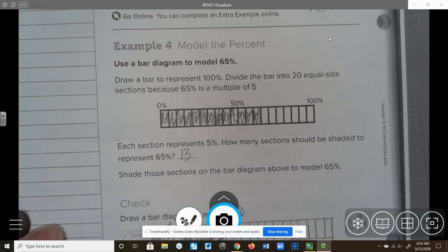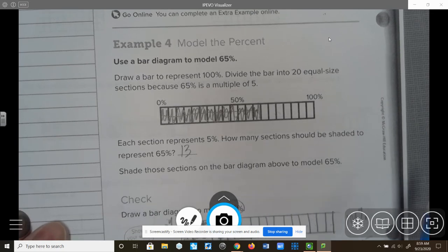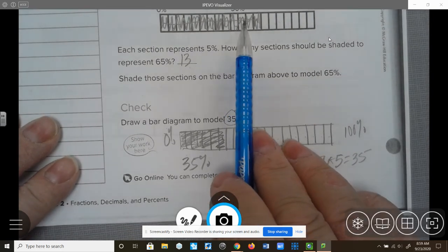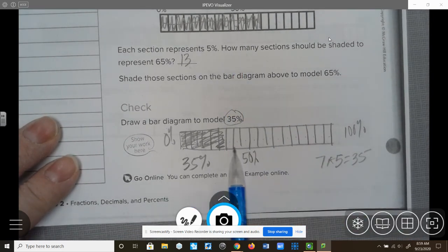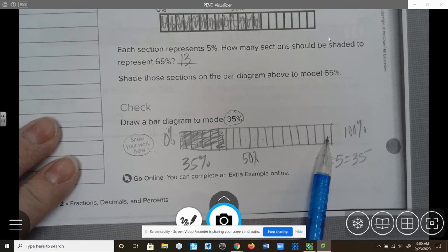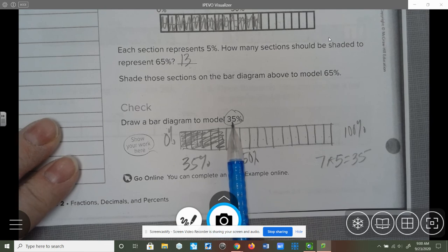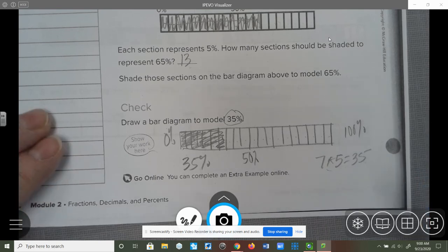Going on to the bottom of the page, draw a bar model to show 35%. So this is what I did. I know that 35 is a multiple of 5, just like what we had up here in example four. So I went ahead and I drew my box, my rectangle, and I divided it into 20 sections because 20 sections would equal 5% in each section. And I need to find 35%. So I know that 7 times 5 is 35. So I'm going to have to color or shade in 7 sections. 5, 10, 15, 20, 25, 30, 35. There are 7 sections. I shaded that in. That represents 35%.